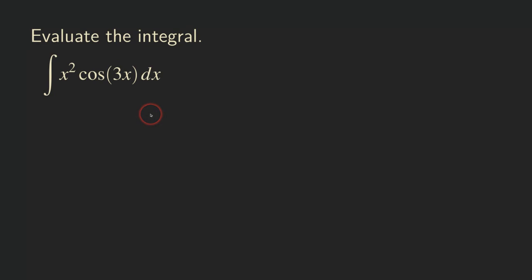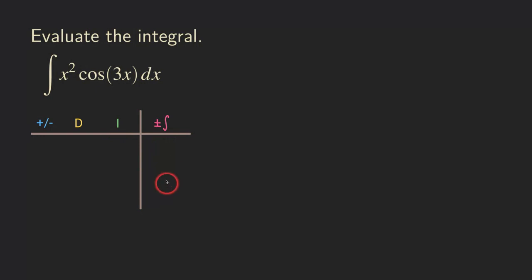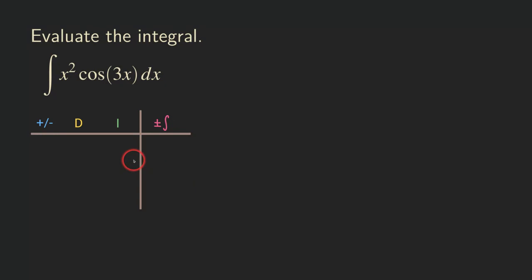We are going to set up the table with a sign column, a differentiation column, and an integration column — and also a side column to keep track of when we should be stopping. I'm not going to show the integration by parts formula in this video. If you want to see that, you can see the link for the introductory video, or click the link on the paper, which has details explaining how the formula relates to this tabular method and why it works.